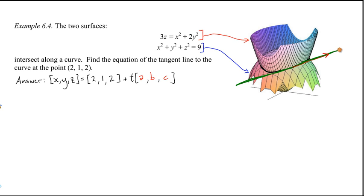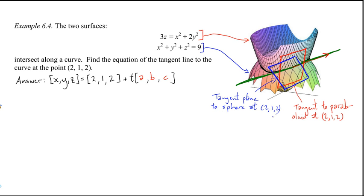So, there's the line, the green tangent line, and we're trying to figure out what its equation is. Now, let's just draw a tangent plane to the paraboloid. So, let's draw it in red here. There's a red tangent plane to the paraboloid at the point 2, 1, 2. Now, let's also draw a tangent plane, in blue here, to the sphere at the point 2, 1, 2. So, now, emanating from the point 2, 1, 2, we've got a green tangent line to the curve, a red tangent plane to the paraboloid, and a blue tangent plane to the sphere.